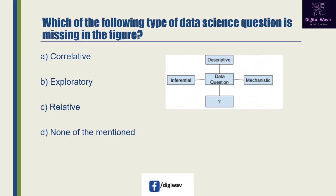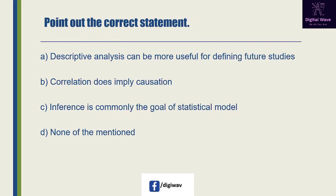Next question: which of the following type of data science question is missing in the figure? Options are: correlative, exploratory, relative, and none of the mentioned. The right answer will be B: exploratory, because exploratory analysis is used to find a relationship you didn't know about.